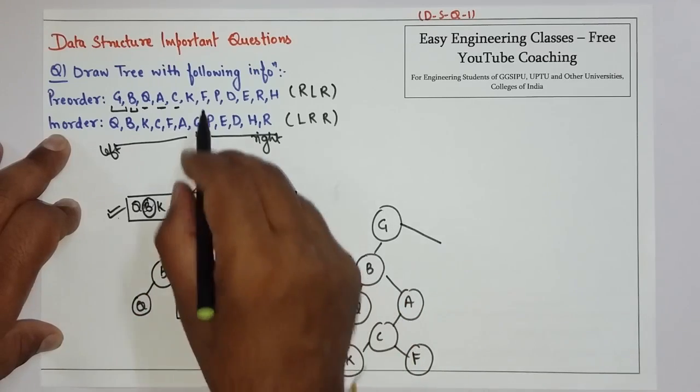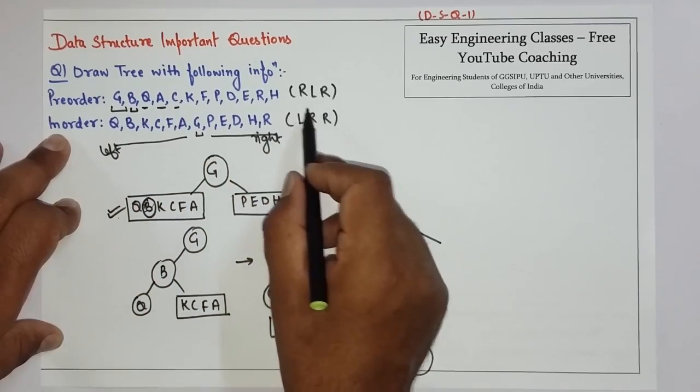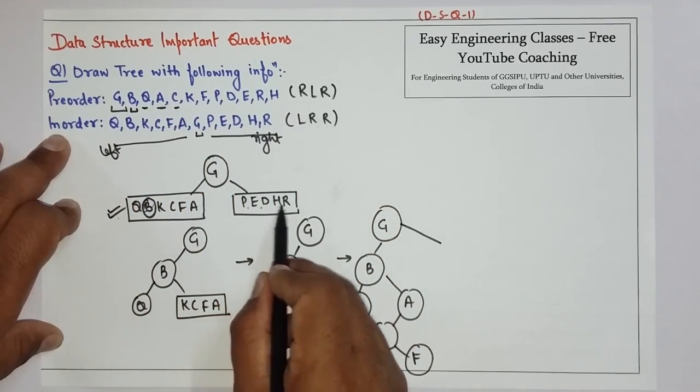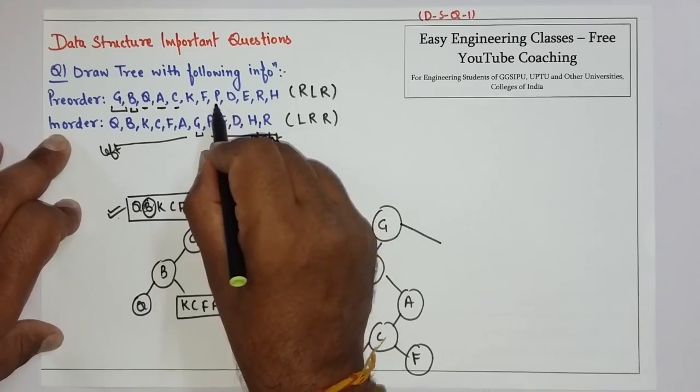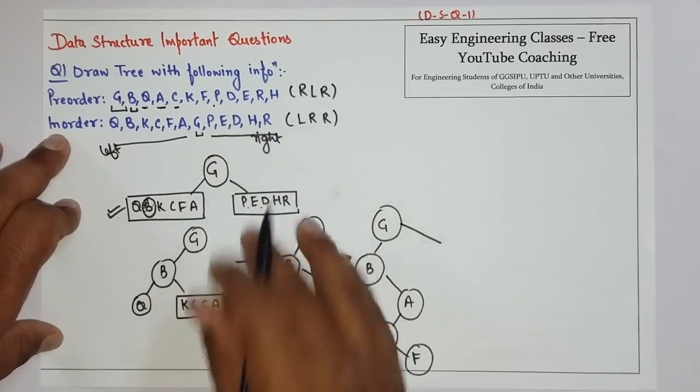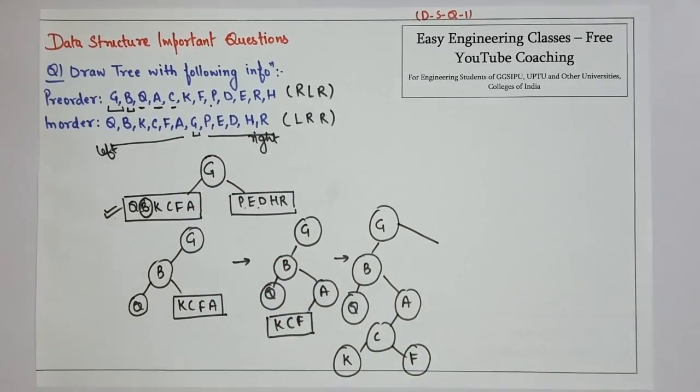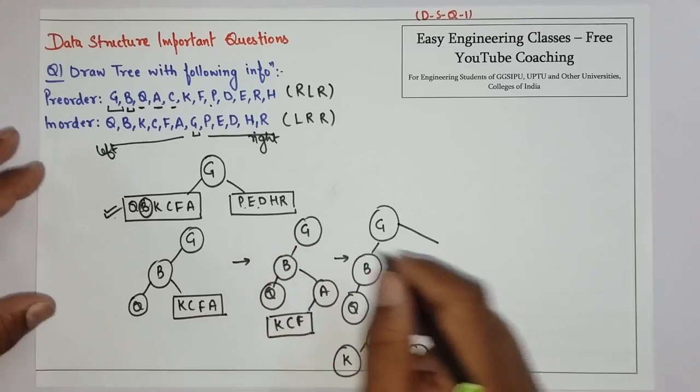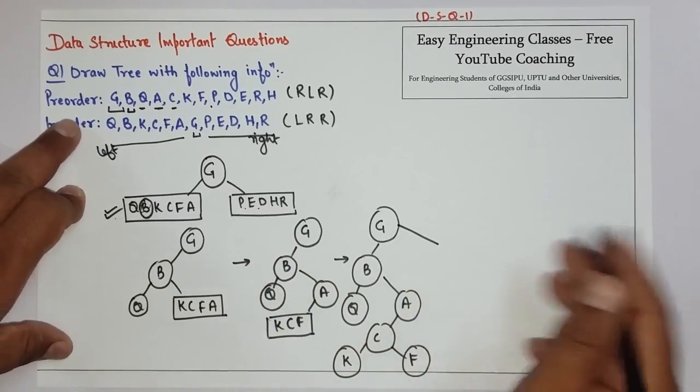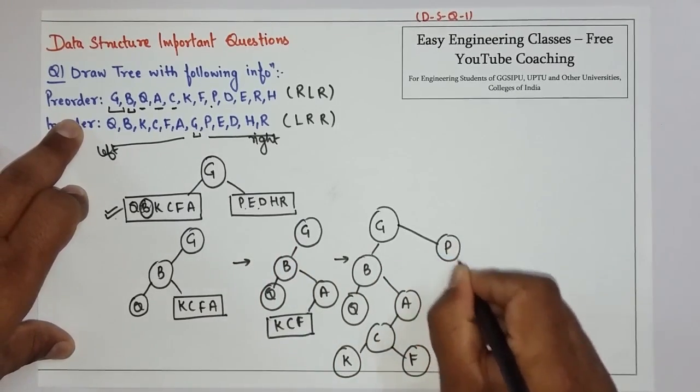See which is the first element to occur in this pre-order out of P, E, D, H, and R. The first that occurs is P, so P will be the root. All the elements on the right are right subtree elements.